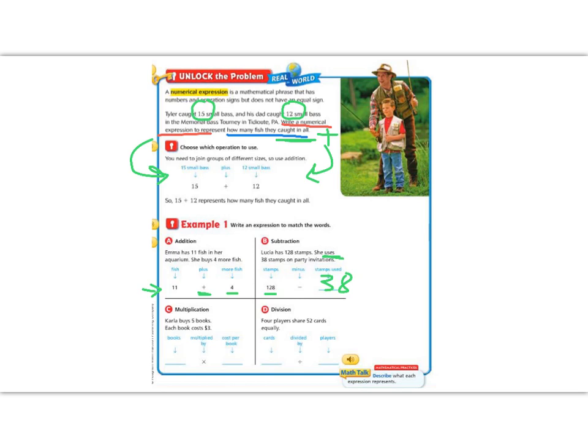C. Multiplication. Carla buys 5 books. Each book costs $3. We've talked about that word each before. Each tells me to multiply. We have 5 books times each one is $3. 5 times 3.